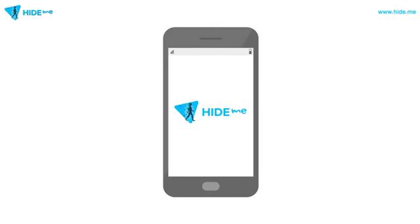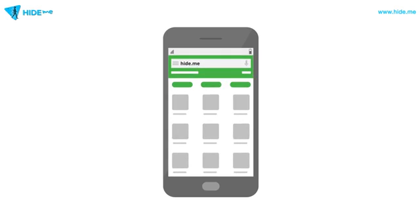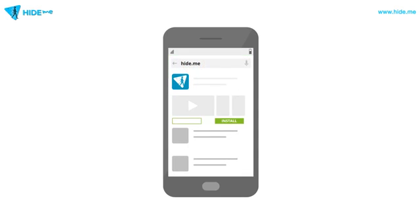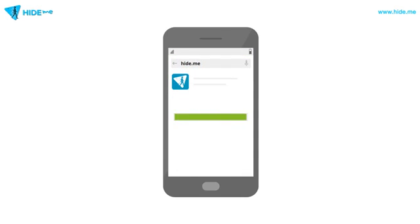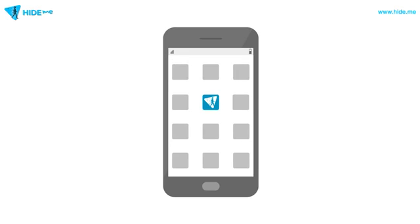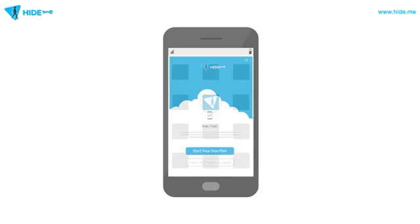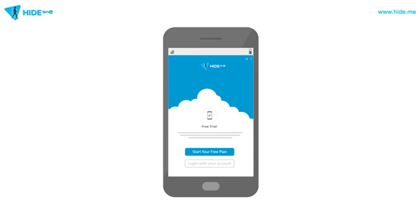Here is a quick tutorial on how to use Hi.me on your Android device. Just download the Hi.me VPN app from the Google Play Store and it is ready to use. Tap the app icon to launch the VPN.